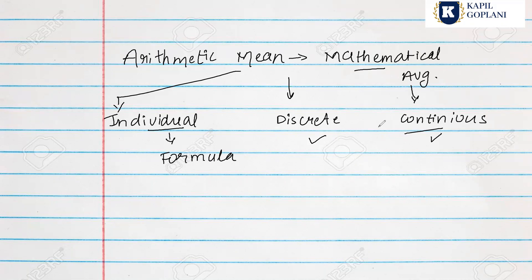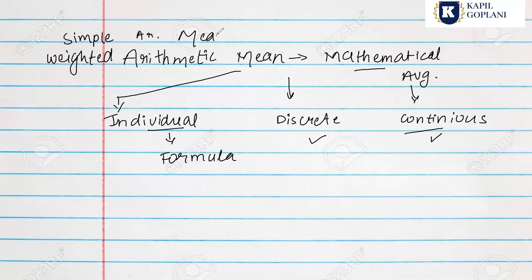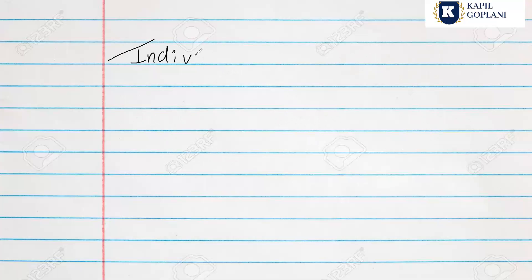We will start with the methods. There are two types of arithmetic mean: Simple Arithmetic Mean and Weighted Arithmetic Mean. We will start with Simple Arithmetic Mean. The first series we are taking is Individual Series. What is the meaning of individual series? It is a series where only raw data is given — there is no frequency mentioned.